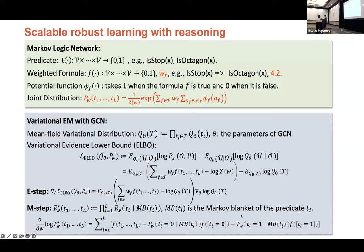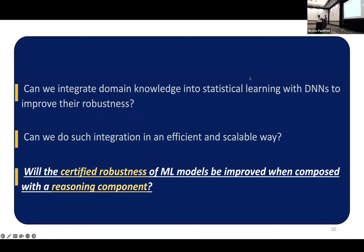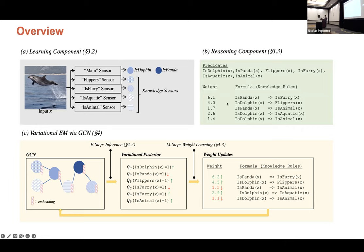So overall, we can see our pipeline in this figure. We have a learning component. We train multiple knowledge sensors and some main sensors, and we collect all the output. And the second thing is that we define a reasoning component based on all these sensors, like defining the predicates, defining the formulas and initializing the weights. Then we do variational EM with GCN. We encode all these predicates in a graph and learn the corresponding variational posterior distribution. And then in the M step, we learn the corresponding weights of the formulas. And then we do multiple times until it converges.